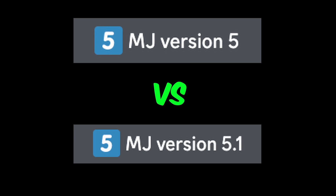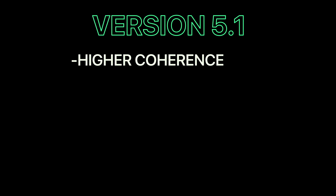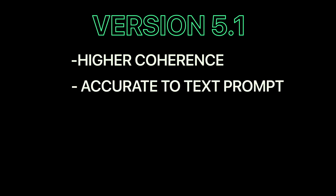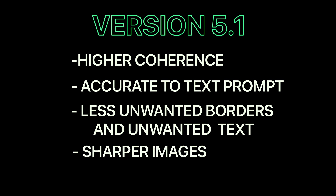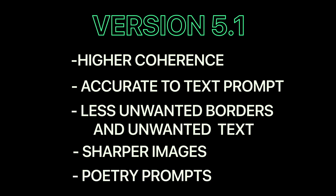What is the difference between version 5 and 5.1? Version 5.1 has higher coherence, meaning it performs better by generating images closer to what you're looking for. It also has higher accuracy to text prompts — better than all other versions. There's less unwanted borders and text artifacts, and images are now sharper, less grainy, and less blurry. Version 5.1 also brings back poetry prompts, which were abandoned in version 5, and I'll talk more about those later.